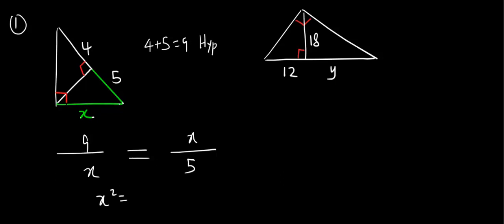Now, x squared is 5 times 9, which is 45. Distance is positive, so I'm going to take the positive root, square root of 45. Square root of 45 is 5 times 9. 9 is 3 squared, which means 3 can come out and 5 stays.